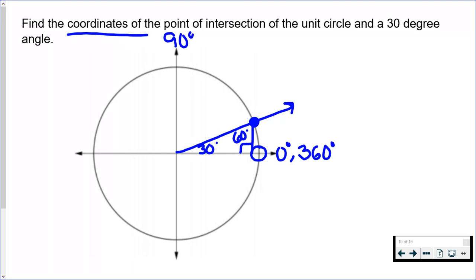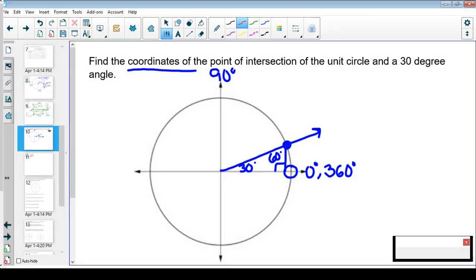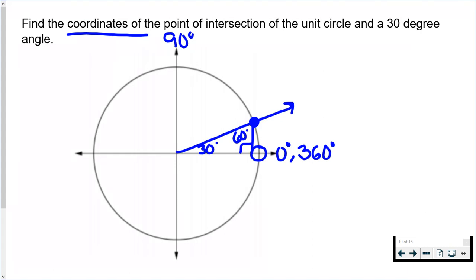Now I can use my special right triangles rules to figure out this ordered pair that I'm looking for. So the shortest side of your 30-60-90, which is across from the 30-degree angle, is just labeled s. That's side length s.